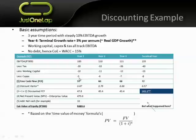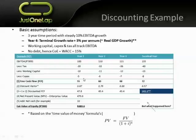CAPEX represents the consumable part of property, plant and equipment that we have to replenish each year, so it tracks EBITDA too. Forecasting EBITDA pushes down through all these line items. In year one, free cash flow equals EBITDA less tax, less the working capital change, less CAPEX — giving us a free cash flow of 55,000 rand.